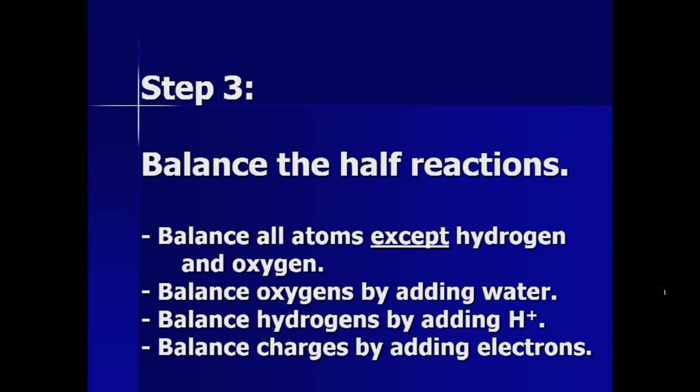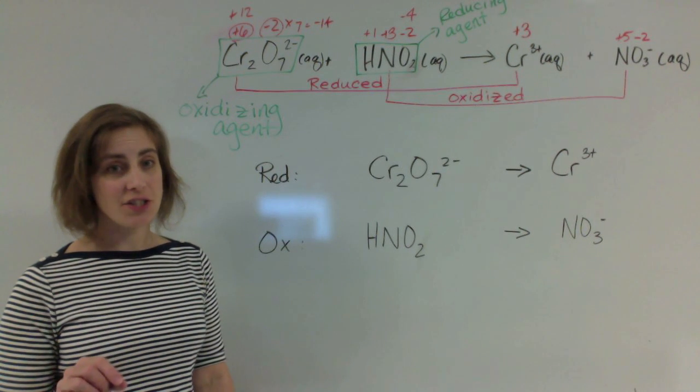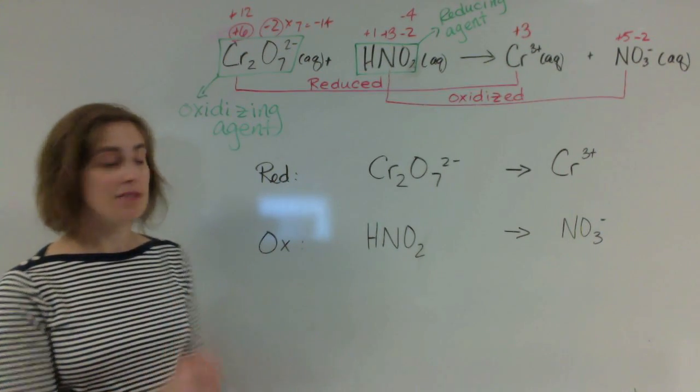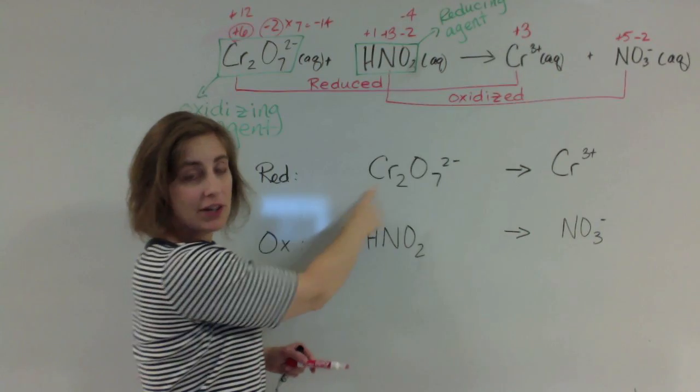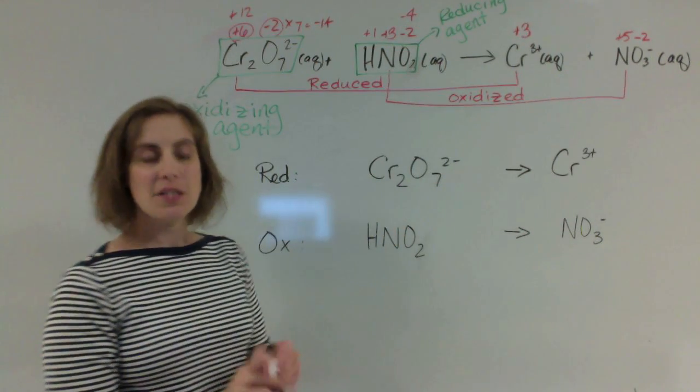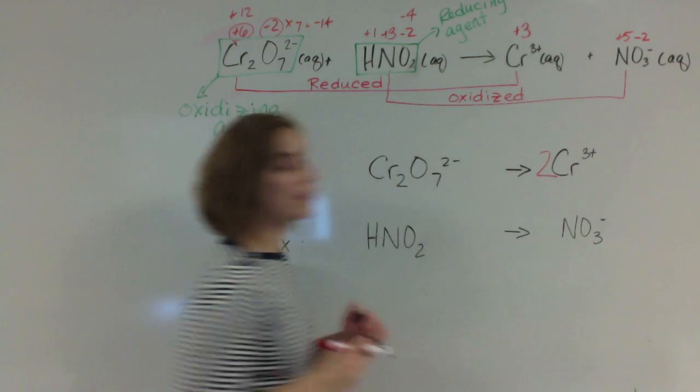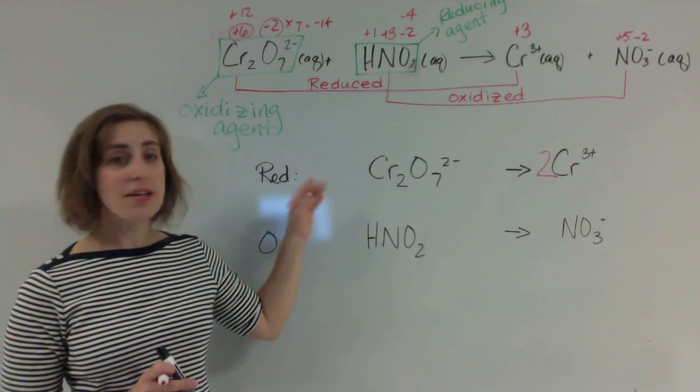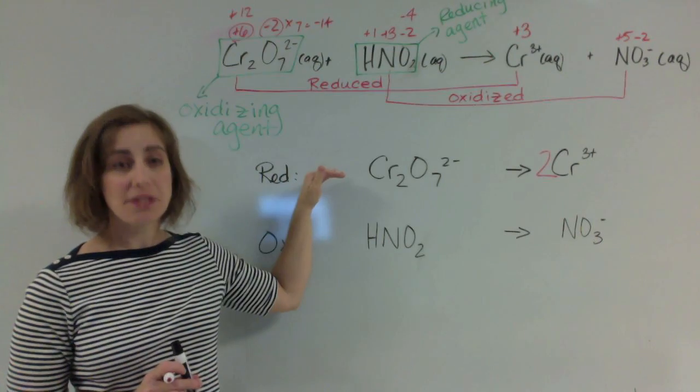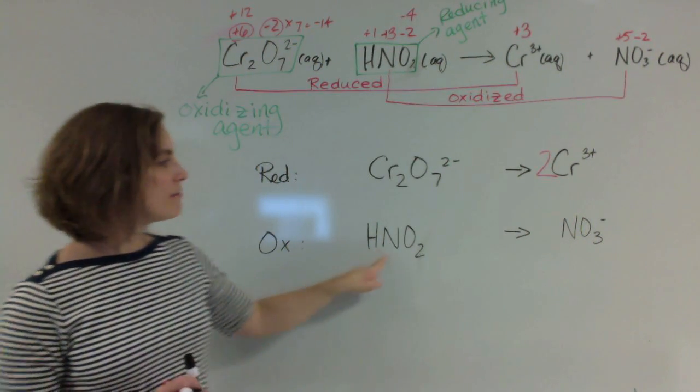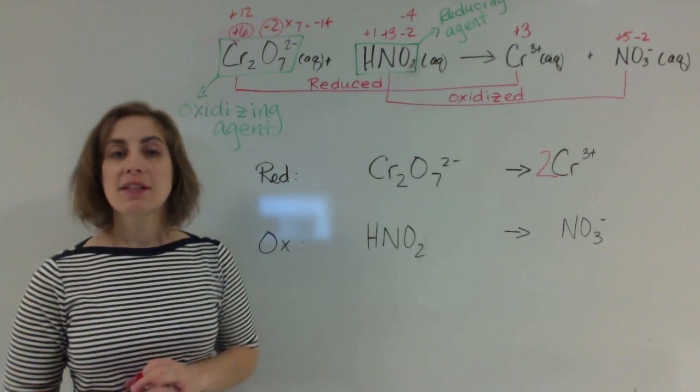There's actually 4 steps to balancing each half reaction. The first thing we're going to do is balance the atoms, except hydrogen and oxygen. But all the other atoms involved, we'll go ahead and make sure they're balanced on both sides of the reaction. So I have two chromiums over here and one chromium over there. So just like normal balancing, I'll add a 2. There. Now everything, all the atoms that are not oxygen or hydrogen are balanced on the reduction half reaction. Let's do the same to the oxidation half reaction. Looking at nitrogen, already balanced. Great. Let's move on to step 2.